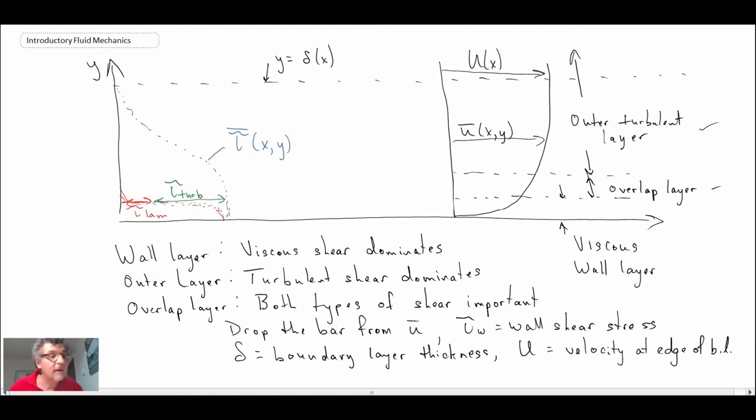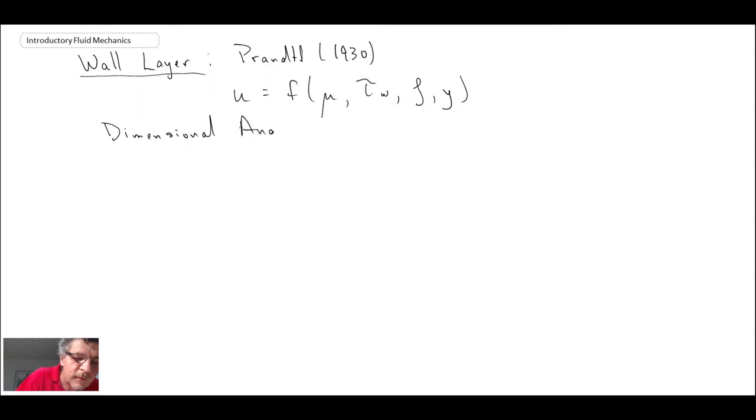And what Prandtl and Von Karman and Milliken did is they went through and they came up with velocity profiles. A lot of this was using dimensional analysis as well as experimentation. But a velocity profile for the wall layer was developed by Prandtl, Ludwig Prandtl. He was at Göttingen when he did this, and this was in 1930. And he came up with an argument saying that the velocity in the layer was a function of the viscosity, which it would be in the wall layer, the wall shear stress, the density of the fluid, and the distance away from the wall. And using dimensional analysis, he was able to come up with a thing called the law of the wall.